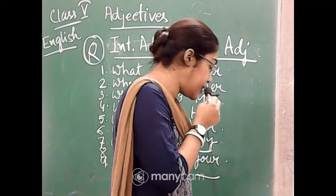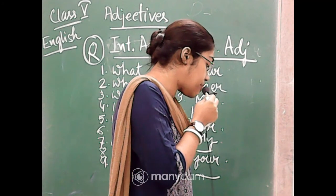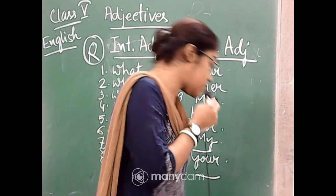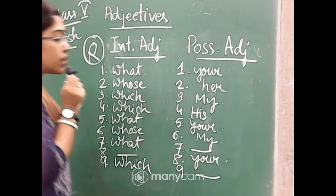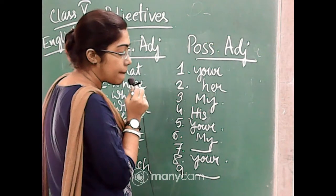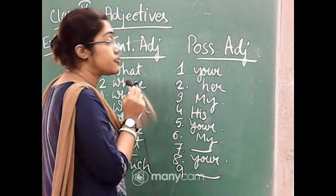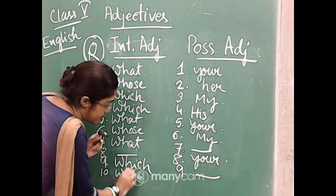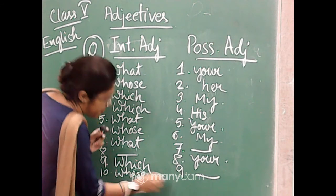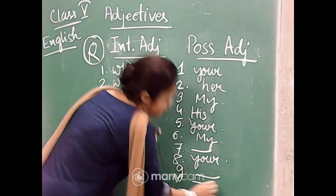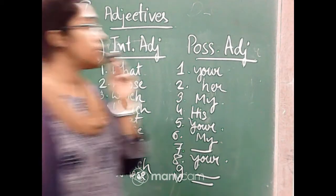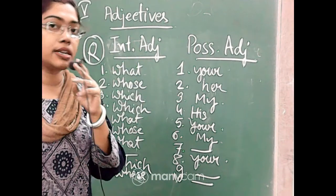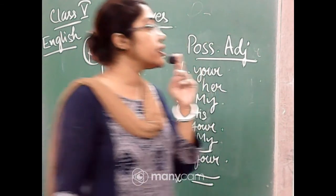Number ten: 'Whose painting did you like the most?' — here also only one adjective is present, that is 'whose.' There is no possessive adjective. Number ten: only 'whose,' and under possessive give a dash.